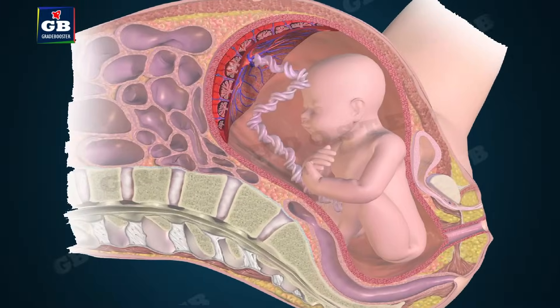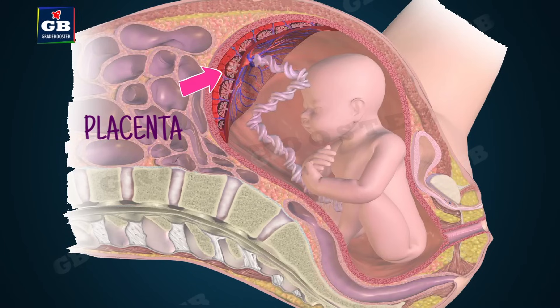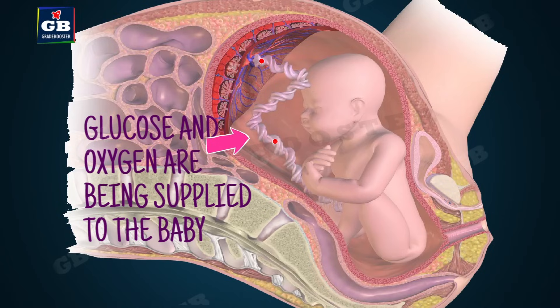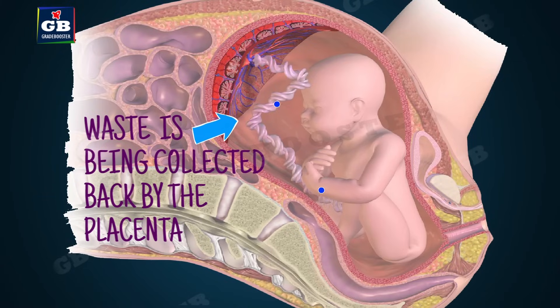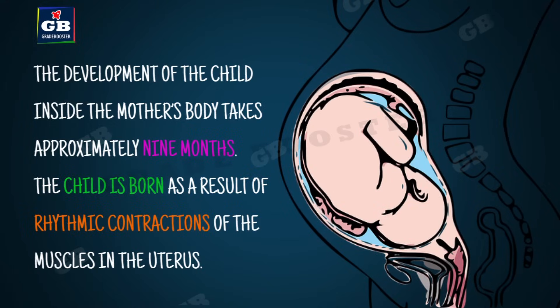The fertilized egg — the zygote — gets implanted in the lining of the uterus and starts dividing. The placenta is a special tissue that helps the embryo get nutrition from the mother's blood; it is embedded in the uterine wall and provides glucose and oxygen to the embryo, and also transfers waste generated by the embryo into the mother's blood. The development of the child inside the mother's body takes approximately nine months — this period is called the gestation period.